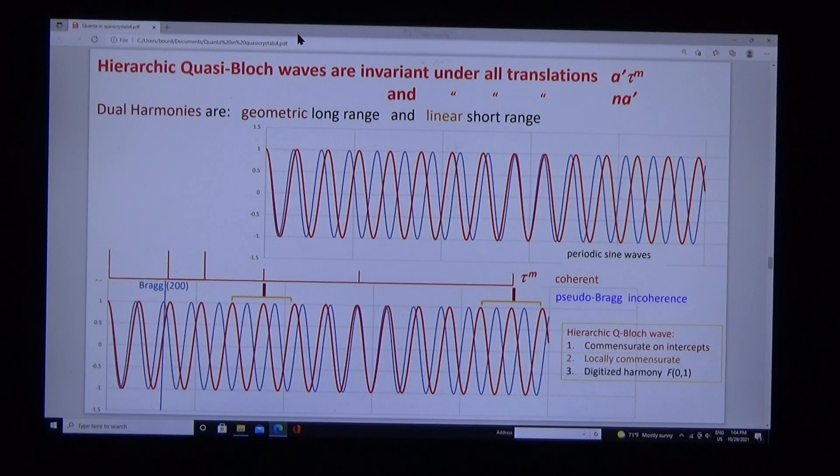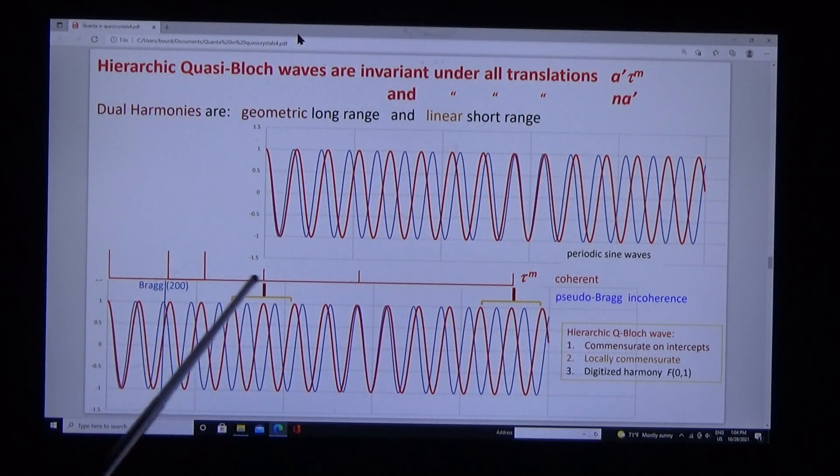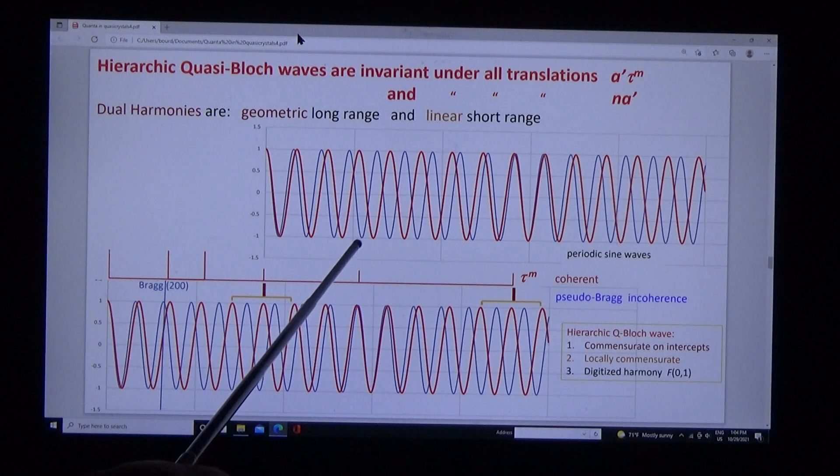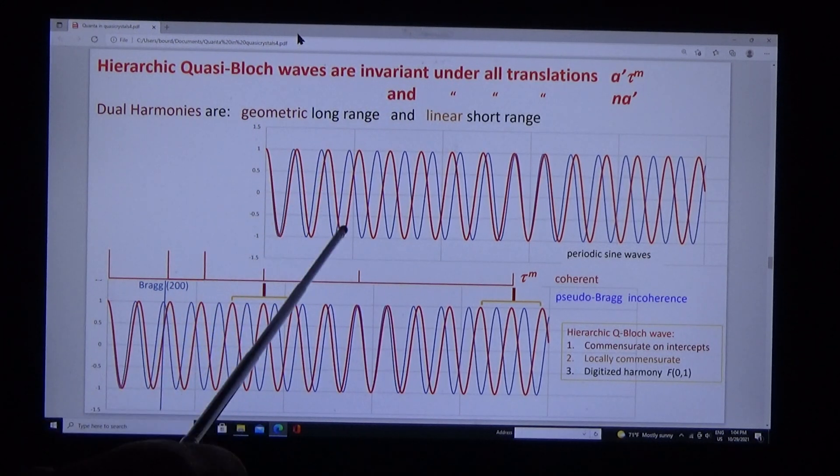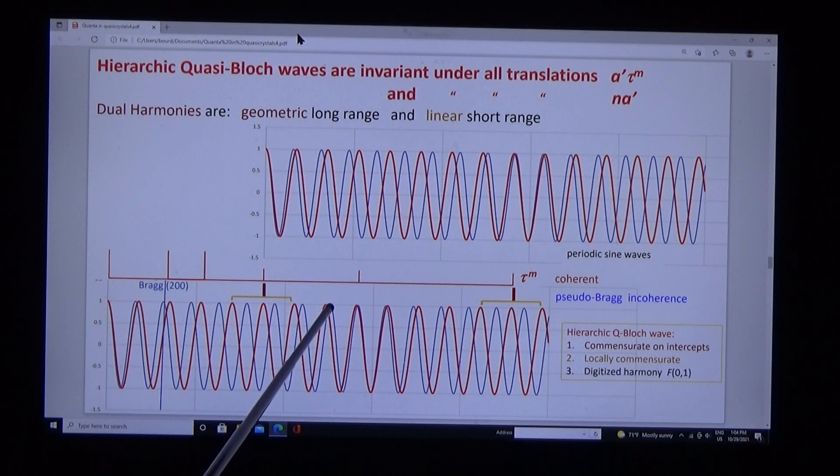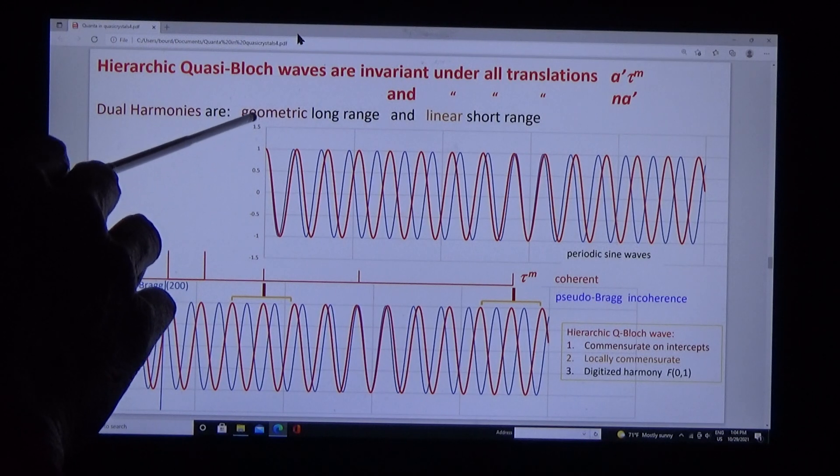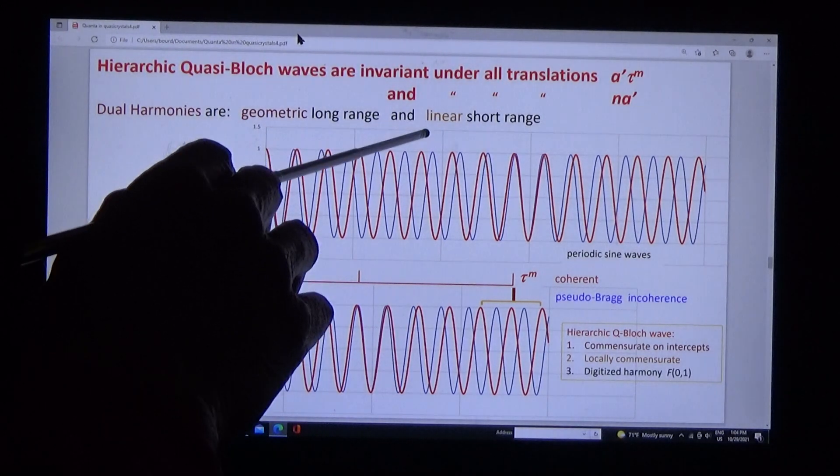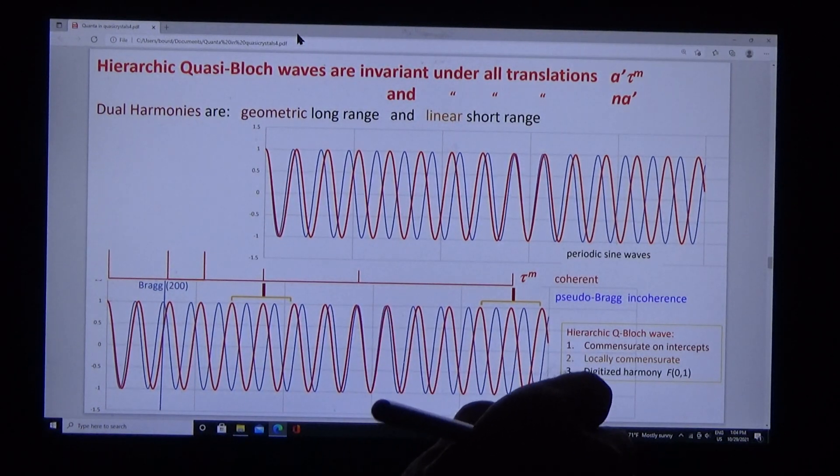I can illustrate that further. The hierarchy quasi-Bloch waves are invariant under all translations a tau to the m, and they're also invariant about these sine oscillations. So we're finding there are dual harmonies in the geometric long range and in the linear short range. We have all the properties needed for diffraction.